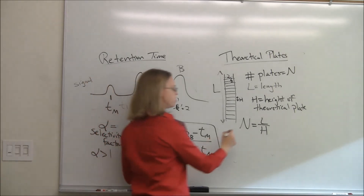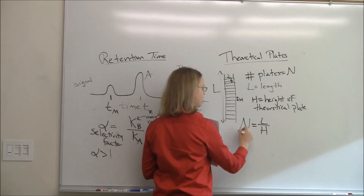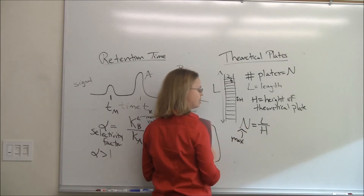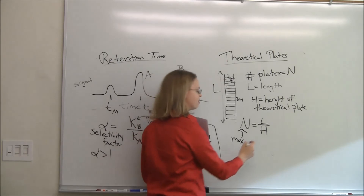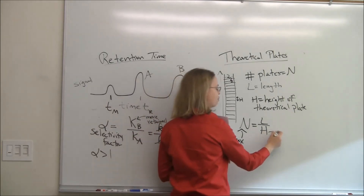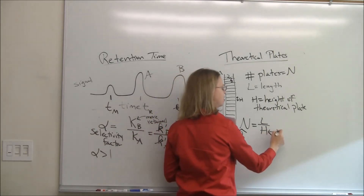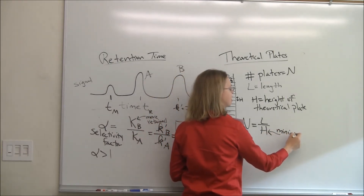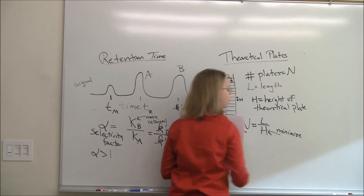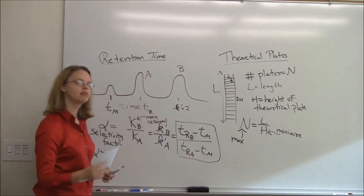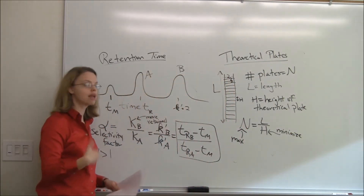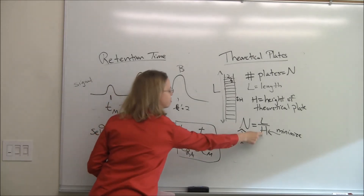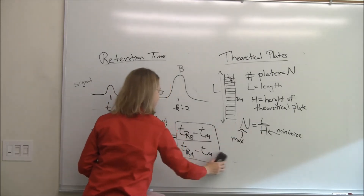What we want to do for a column is maximize the number of theoretical plates. That really means we want to minimize H. So sometimes we'll talk about N, sometimes about H — but remember, we maximize N by minimizing H.